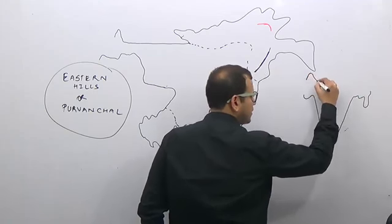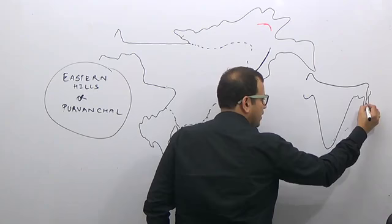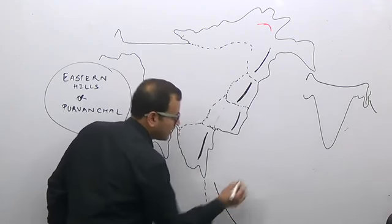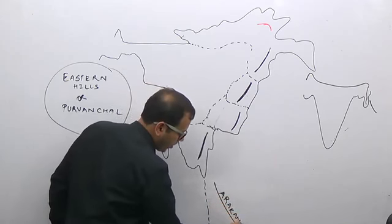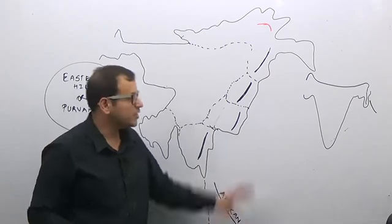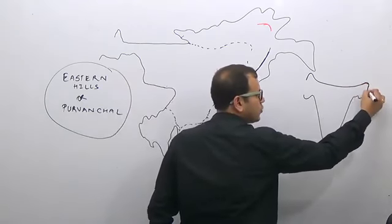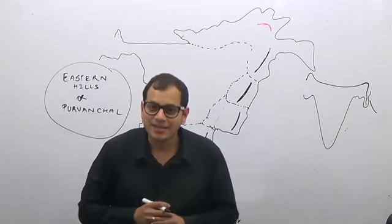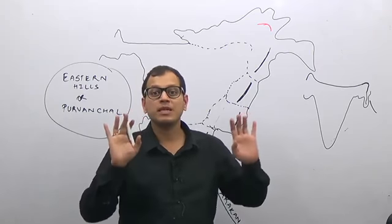The Himalayas, after their origin, take a sudden southward bend and continue as the Eastern Hill Complex. In Myanmar, they continue as the Arakan Yoma mountains. From the eastern region, the Himalayas take a sudden southward bend from Namcha Barwa, because it was given the maximum push by the hills of Peninsular India in the eastern part.